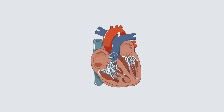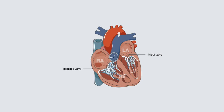An interior look will reveal that the heart has four chambers: the right atrium, right ventricle, left atrium, and left ventricle. The atria and ventricles are separated by valves — the tricuspid valve on the right, and the mitral valve, a bicuspid valve, on the left. Separating the chambers is a septum.